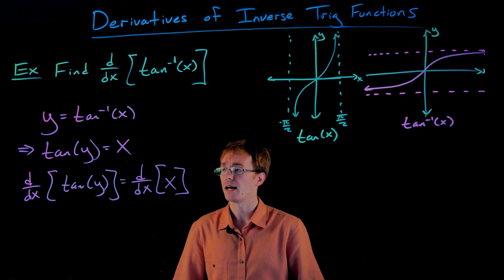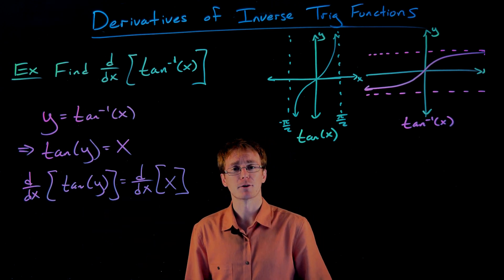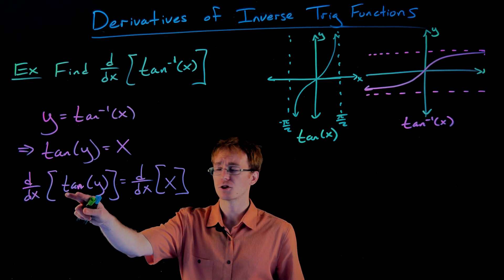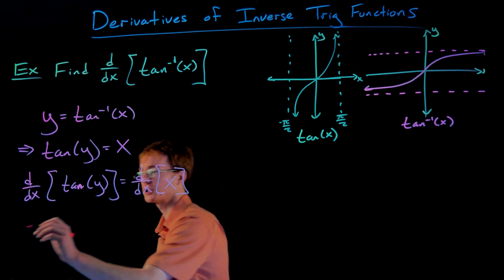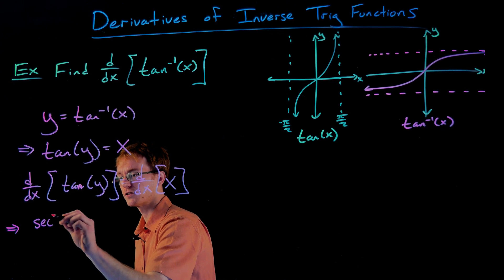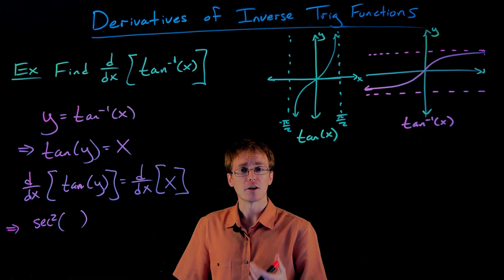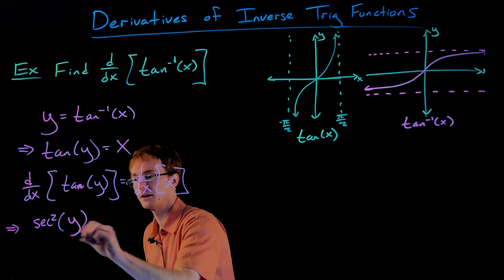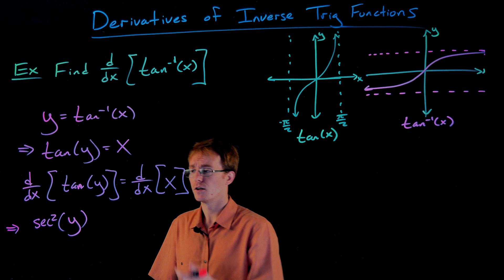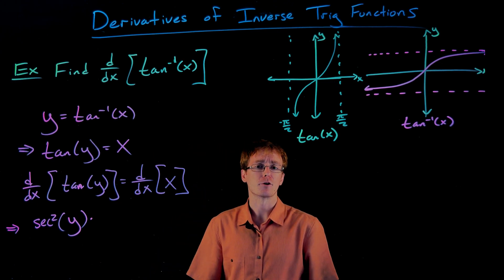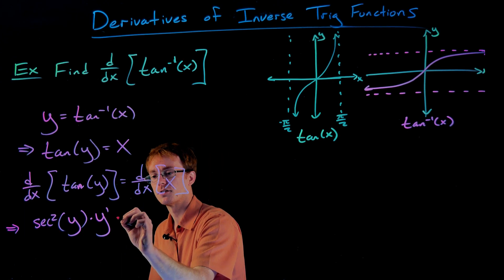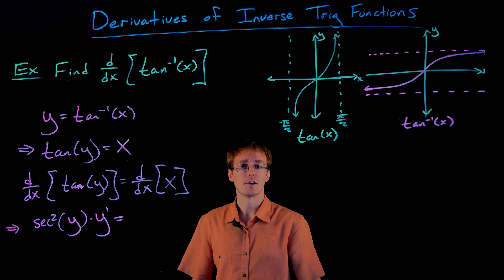We're differentiating both sides with respect to x. For the left-hand side, we're going to have to use our chain rule. The chain rule says take the derivative of your outer function — so we start by taking the derivative of our tangent function, which gives us our secant squared function. We have to evaluate the derivative of our outer function at the original inner function, and our inner function is y in this case. Then we multiply by the derivative of the inner function — that's what the chain rule says to do — and the derivative of our inner function is just y prime.